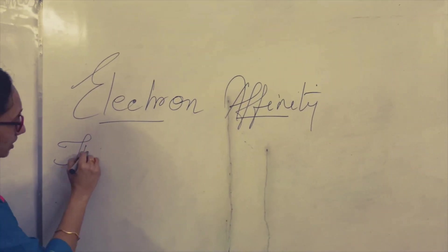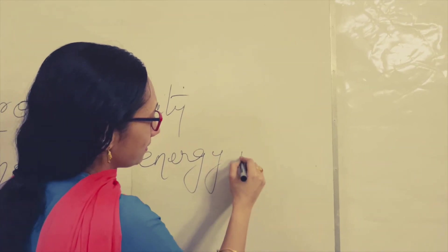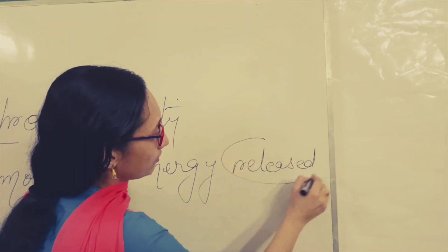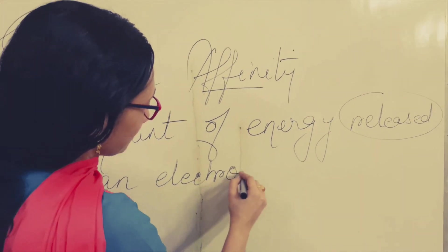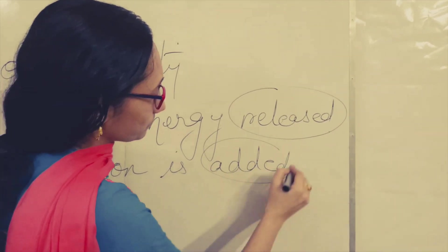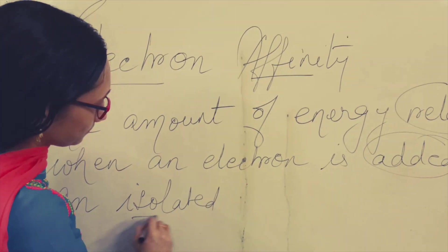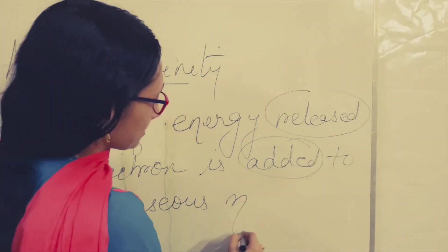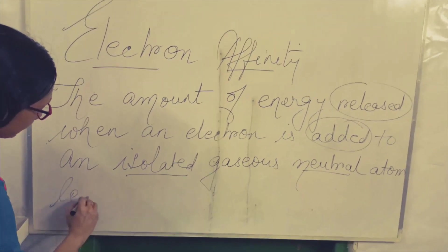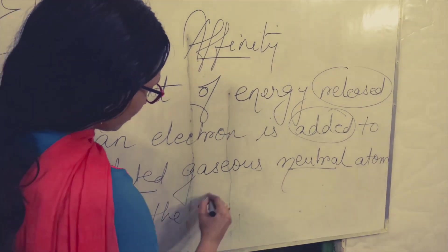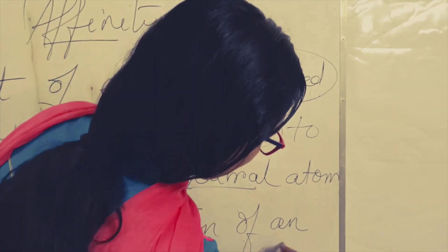Electron affinity is the amount of energy released when an electron is added to an isolated gaseous neutral atom, leading to the formation of an ion.